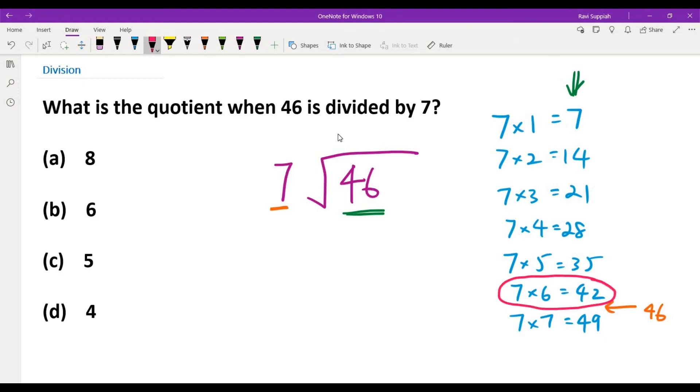And what we have now is 42, so 7×6 is 42. We can perform the subtraction. When we perform the subtraction, we get 46 minus 42, which equals 4. So when we divide 46 by 7, the answer we get is 6 remainder 4.